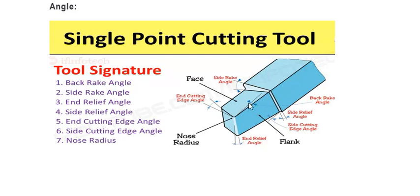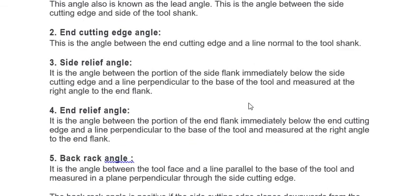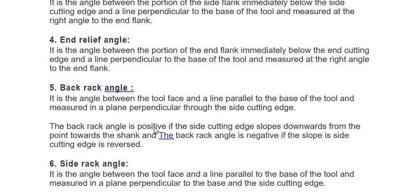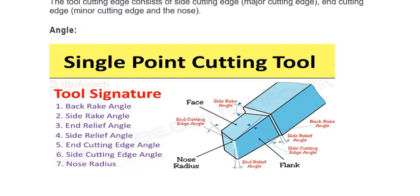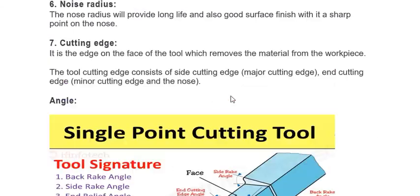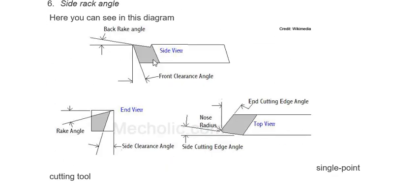The back rake angle can be positive, negative, or zero. The back rake angle is positive if the side cutting edge slopes downward from the point towards the shank. This figure shows the back rake angle is positive. When the tip goes upward, the back rake angle is negative.